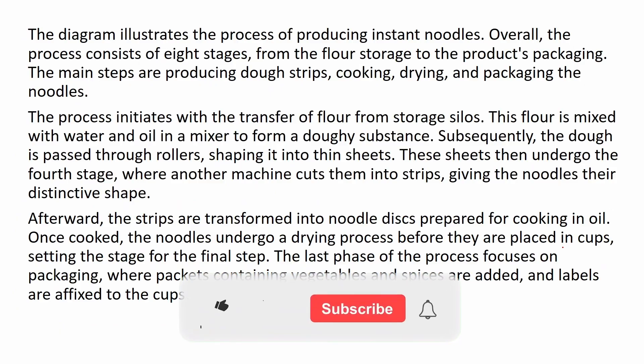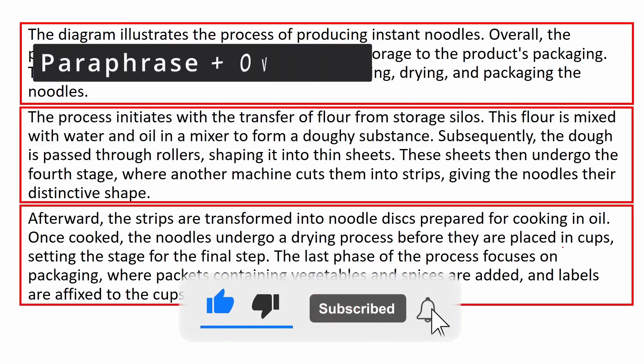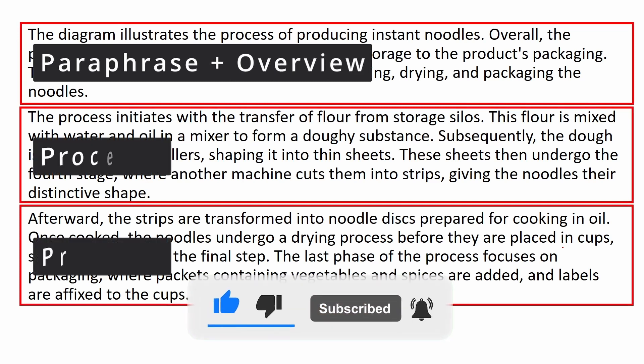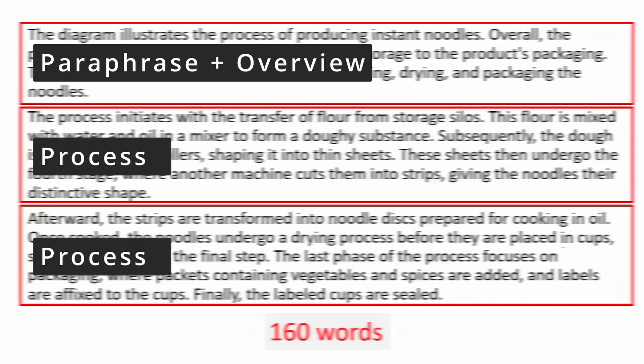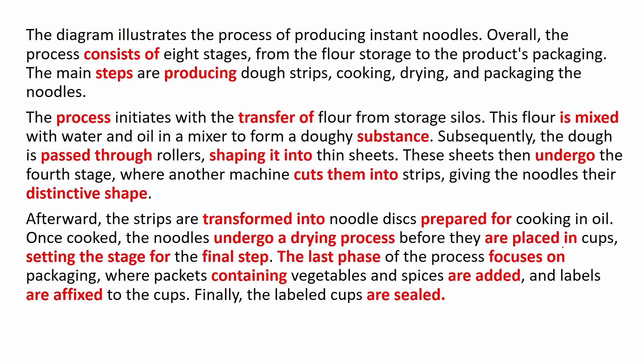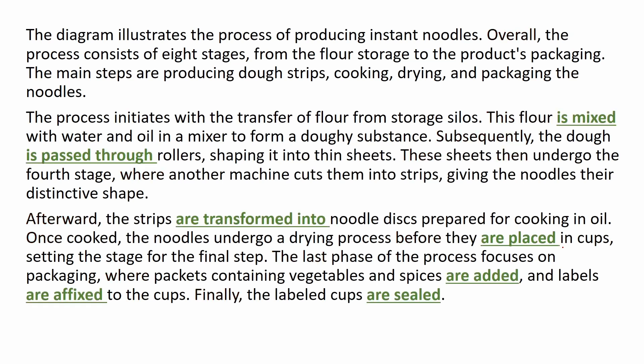I organized my answer in three paragraphs. In the first one, I paraphrased and wrote the overview. And in the next two paragraphs, I describe the process from the start point to the end point. In doing so, I used these words to describe the process. You can see them in red. In this slide, you can find the sequencers and also the words that I use to connect my sentences. If you've noticed, I mostly use passive forms in this writing. You can find them here in this slide.